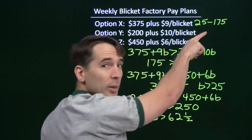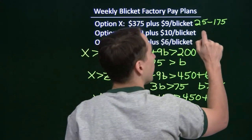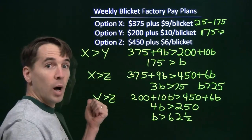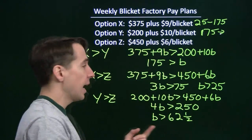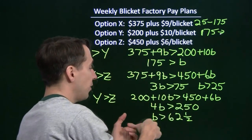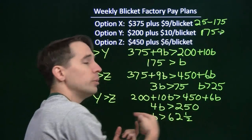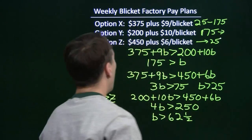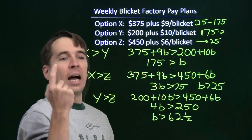I know that option X is the best all the way up to 175, so I'm not going to pick option Y until I get all the way up to 175. But everything greater than 175, option Y is the winner. Option Z is better than option Y when B is less than 62 and a half, but I'm not going to pick option Z all the way down to 25 — anything from 25 on, option X is better. So I want option Z only when B is less than 25. Now that I know which option to choose based on how many blickets I make, I need to go make some blickets.